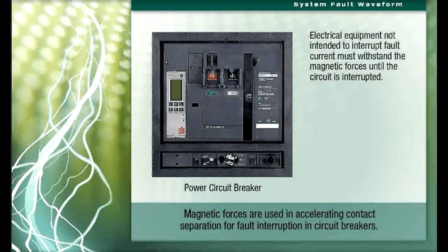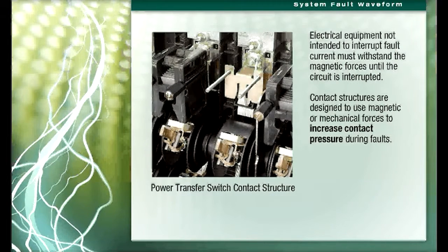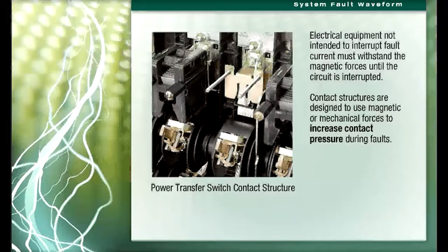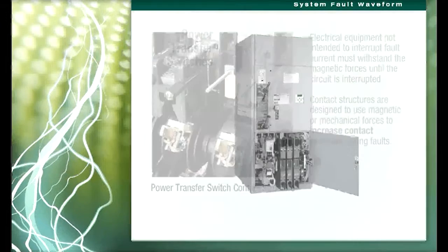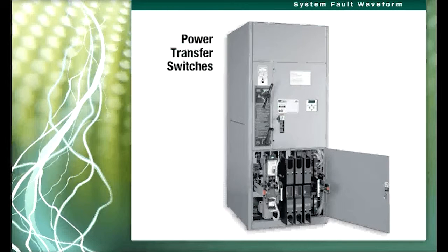Electrical equipment not intended to interrupt fault current must withstand the magnetic forces until the circuit is interrupted. Therefore, their contact structures are usually designed to use magnetic or mechanical forces to increase contact pressure during faults, allowing the protective device, such as a circuit breaker, to sacrifice itself in clearing the fault. Typically, this equipment would include power transfer switches, which have withstand current ratings qualified to UL 1008 transfer switch equipment standards.